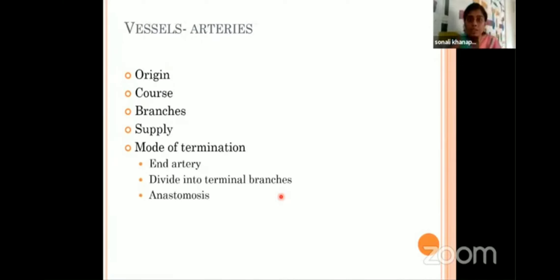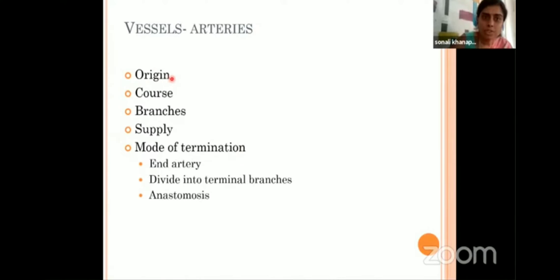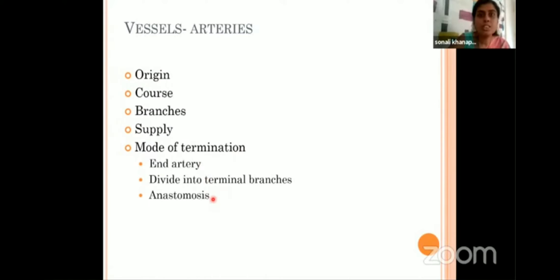Coming to the vessels. Whenever we say vessels, we mean arteries and veins. If a question comes on blood supply of something, you are supposed to write about the arterial supply and venous drainage — don't write only the arterial supply. How do we describe an artery? We see from where it is originating, its course, what branches it is giving in its course, what it is supplying, and how the artery is ending — the mode of termination. Whether it ends as an end artery, divides into terminal branches, anastomoses with another artery, or becomes continuous with another artery.